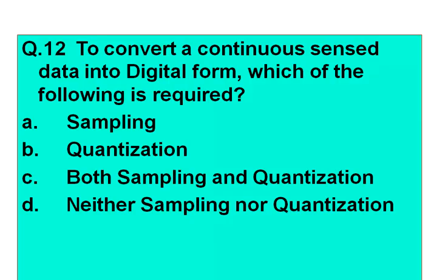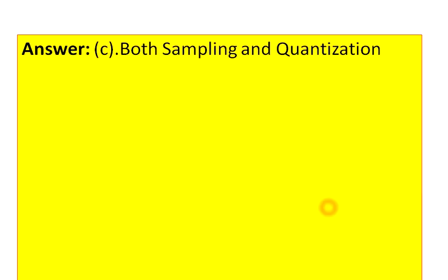Question number 12: To convert continuous image data into digital form, which of the following is required? Option A: sampling. Option B: quantization. Option C: both sampling and quantization. Option D: neither sampling nor quantization. The answer is option C, both sampling and quantization. This has been discussed in detail in previous lectures, so refer to those if needed.